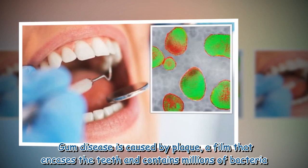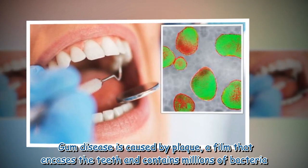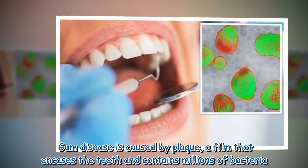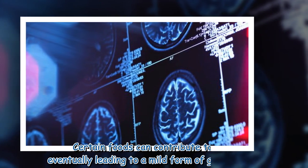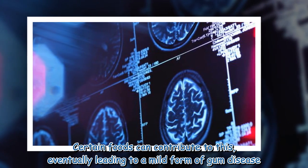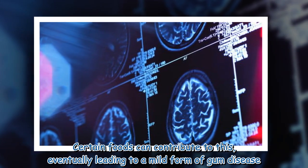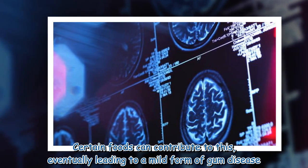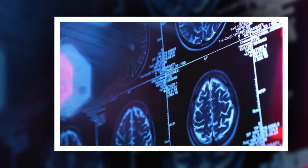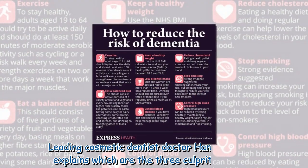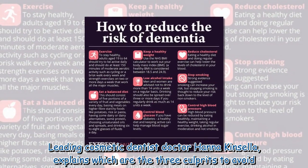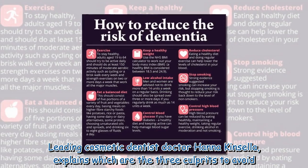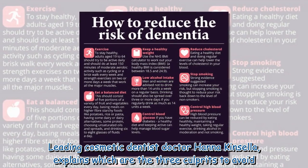Gum disease is caused by plaque, a film that encases the teeth and contains millions of bacteria. Certain foods can contribute to this, eventually leading to a mild form of gum disease. Leading cosmetic dentist Dr. Hannah Kinsella explains which are the three culprits to avoid.